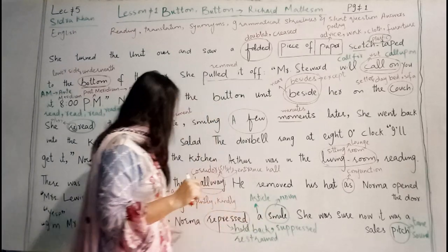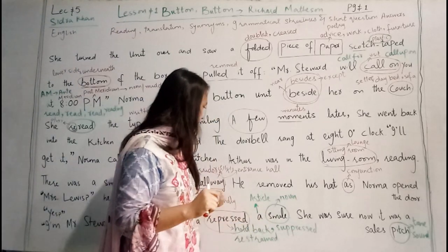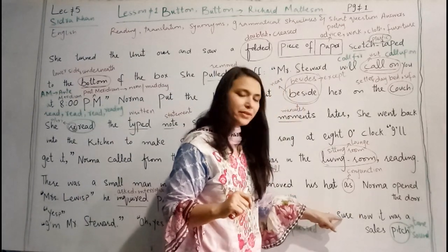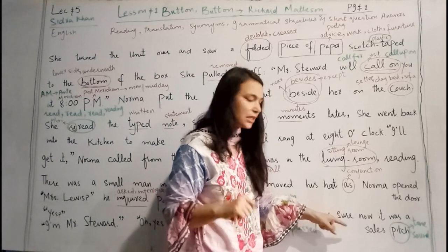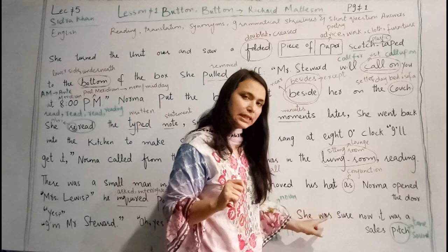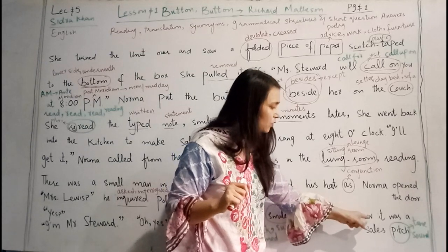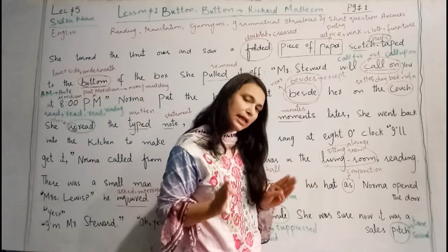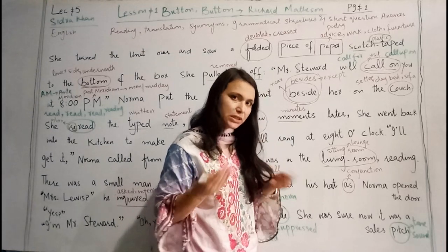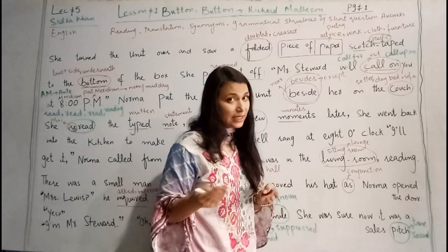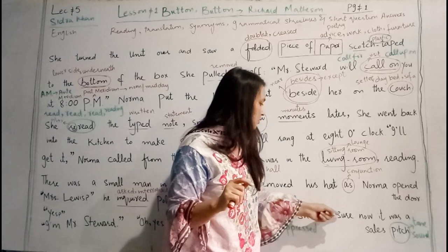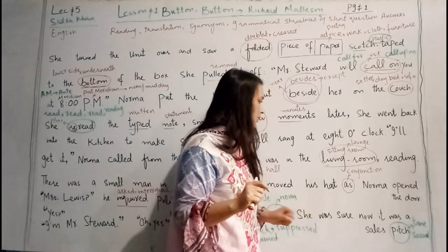Normally muskrana dabai — she was sure now. Aap ushe yaqeen tha. Show — 'show' kya hai? Adjective. Now — 'now' kya hai? Adverb. Aap ushe yaqeen tha. Now — N-O-W — now. It was a sales pitch. Sales pitch — as you know, tone or sound. It was a salesman's award — it was a pitch — it was a salesman's pitch.